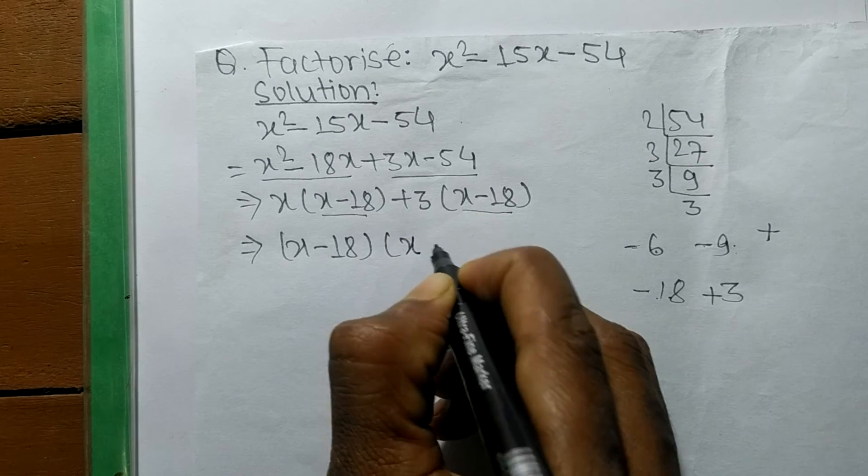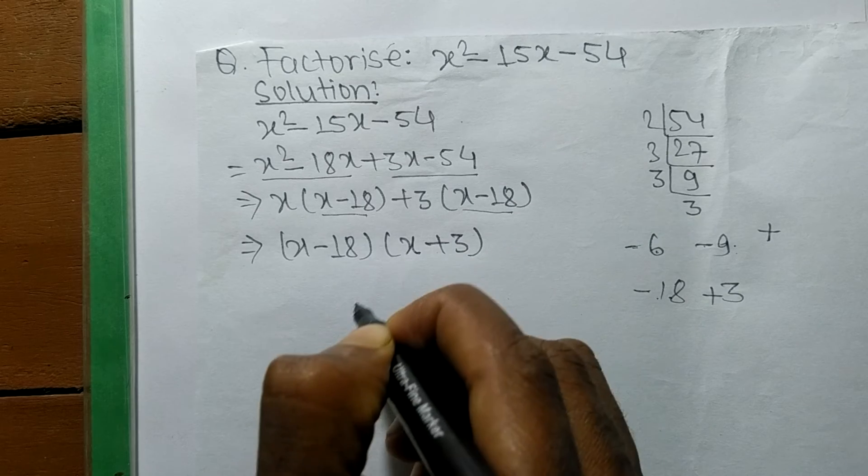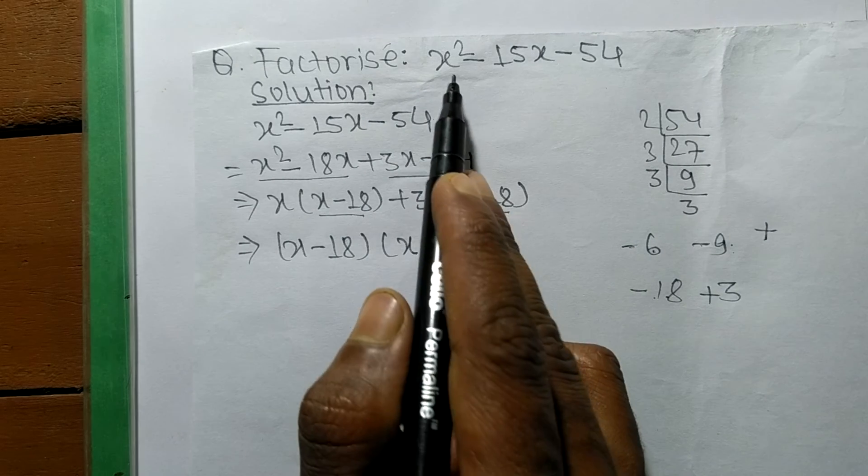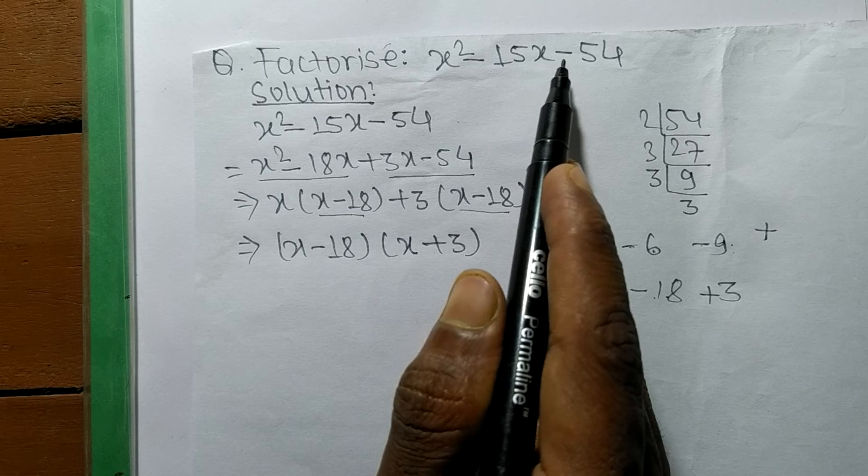So the factors of x² - 15x - 54 are (x - 18) and (x + 3).